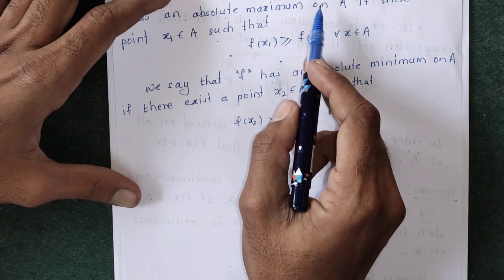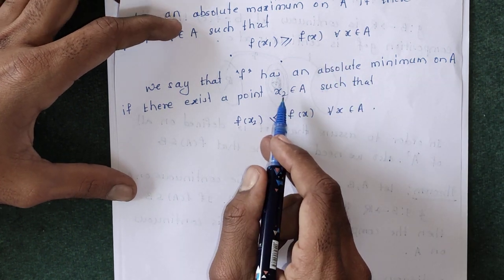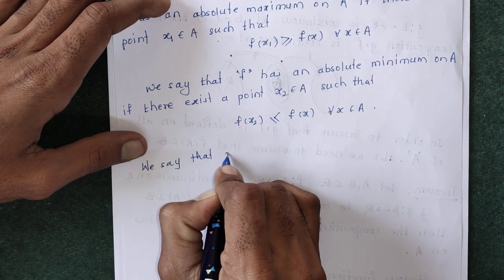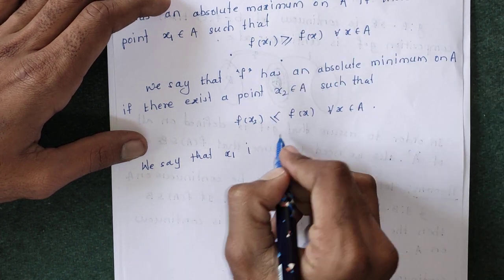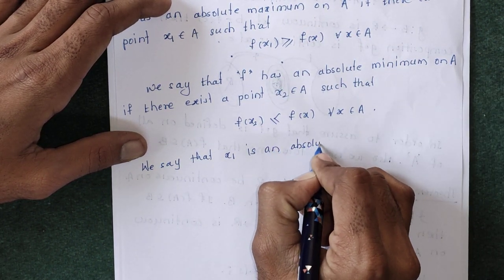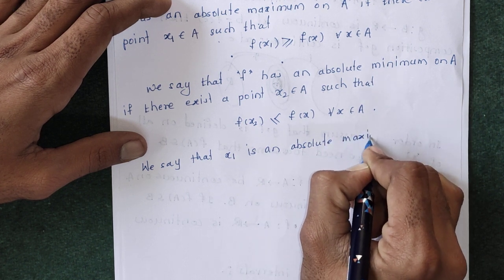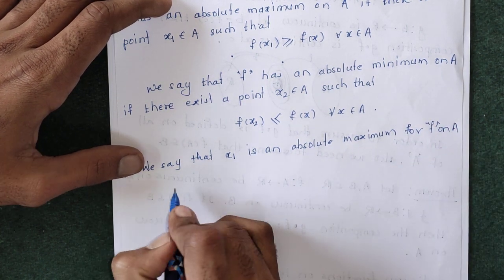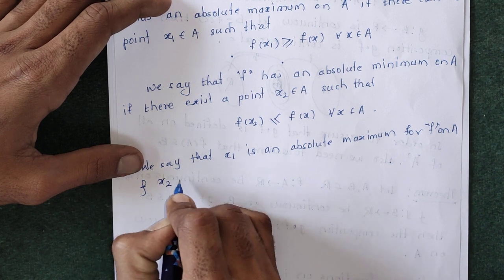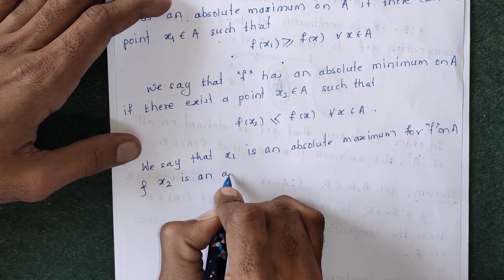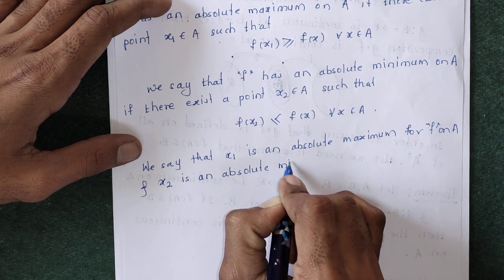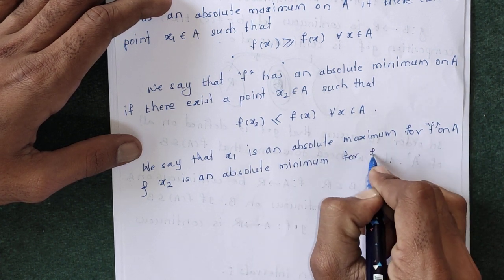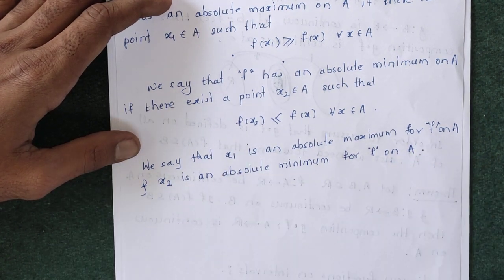Here, x₁ is said to be an absolute maximum and x₂ is said to be an absolute minimum. We say that x₁ is an absolute maximum for f on A, and x₂ is an absolute minimum for f on the domain A, if they exist.